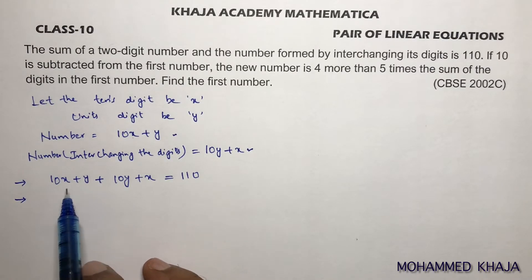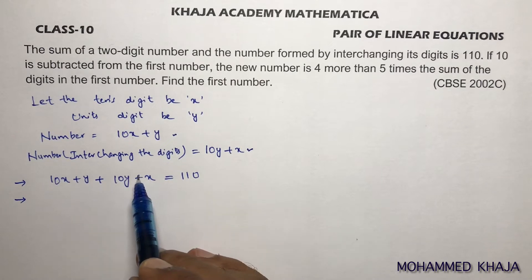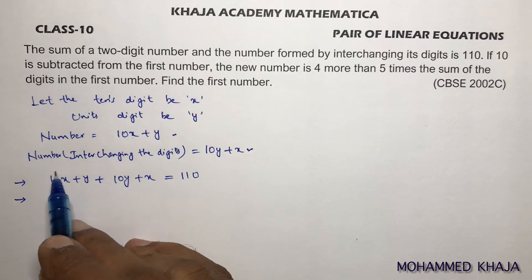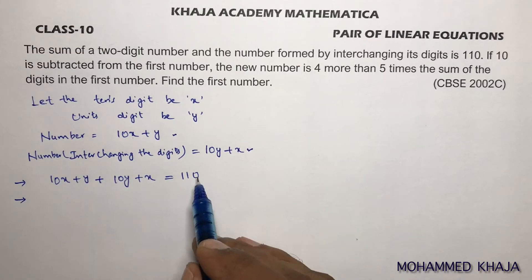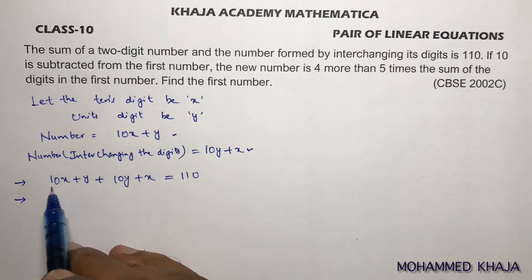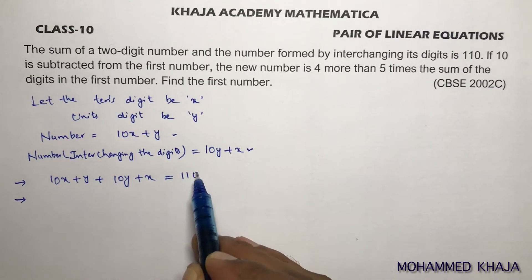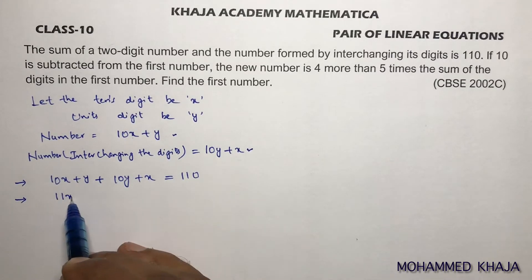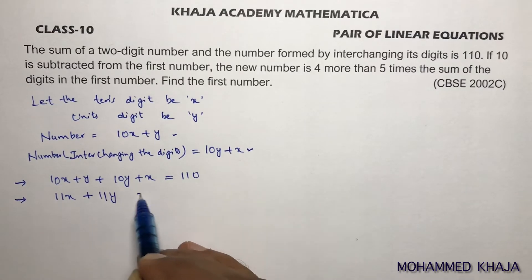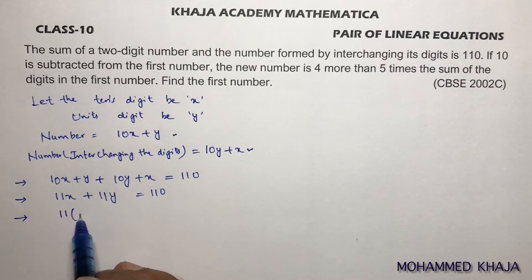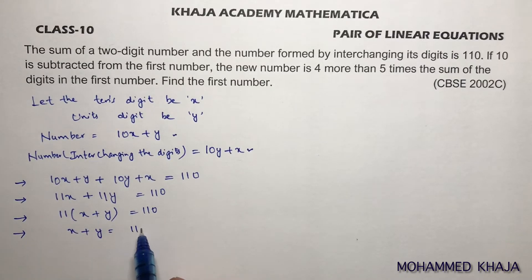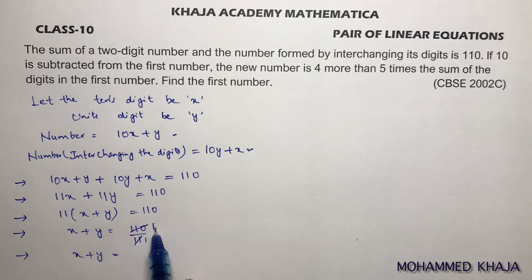Whenever you add a number and the number formed by interchanging its digits, the result is always a multiple of 11. If you subtract, you get a multiple of 9. Simplifying: 11x + 11y = 110, taking 11 common gives x + y = 10. This is equation 1.